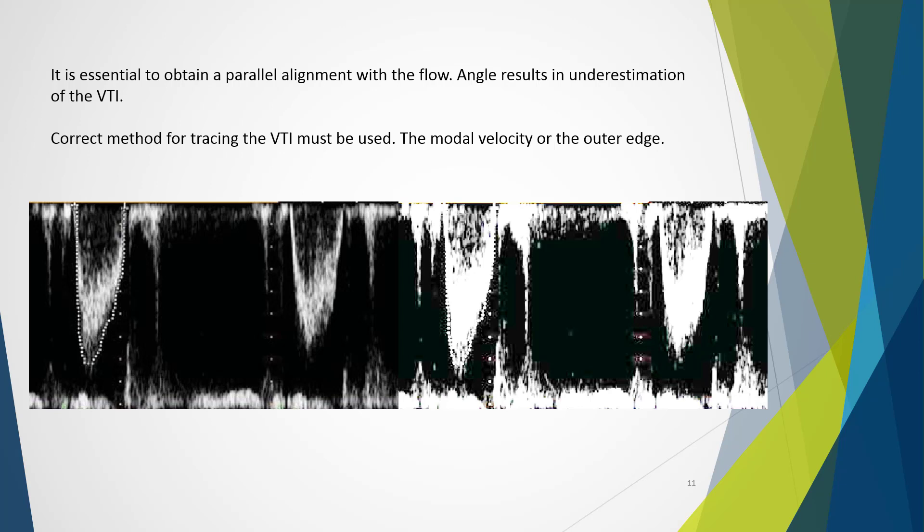Additionally, the correct method for tracing the VTI must be used. For pulse wave and continuous wave Doppler, it is important to use the modal velocity when assessing flow within the vessel. This is the outer edge of the bright line obtained within the spectral trace. The bright edge demonstrates the majority of blood cells moving at the same velocity, and this is what we want to capture. Measuring the outer and less dense signals captures higher velocities but are only representative of a smaller amount of blood cells. This is used when assessing stenotic valves, where we trace the outer edge of the profile to obtain the largest and most representative VTI.